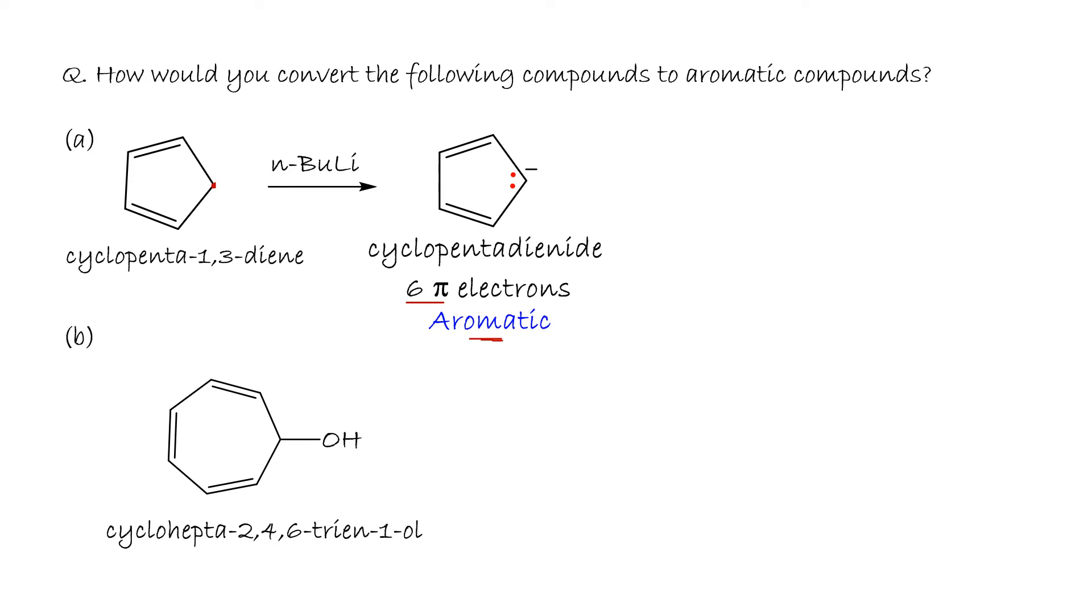Next: cycloheptatriene-2,4,6-triene-1-ol—a seven-membered ring with six pi electrons conjugated. This carbon should contain an empty p orbital. To do that, we have to form a carbocation, so we react this alcohol with sulfuric acid.